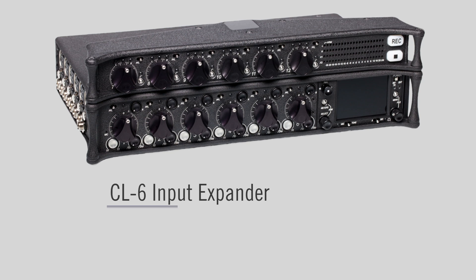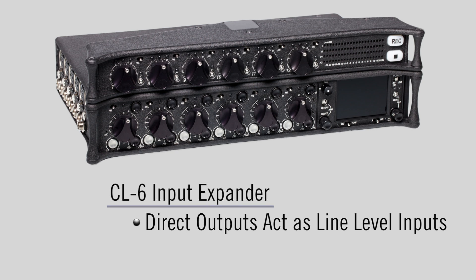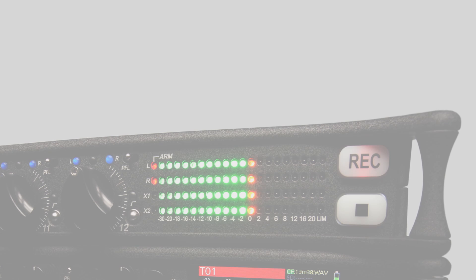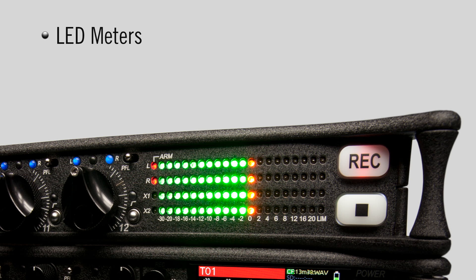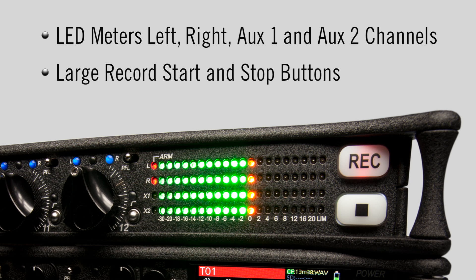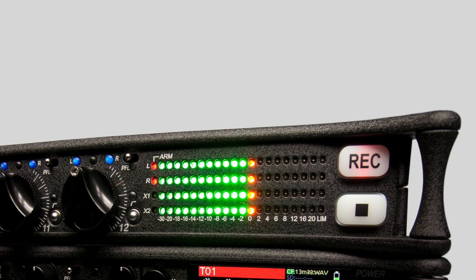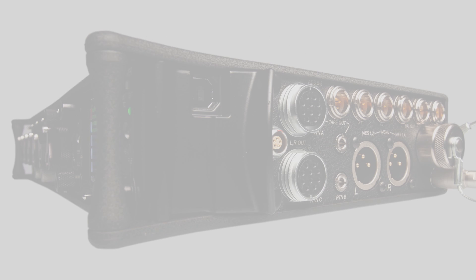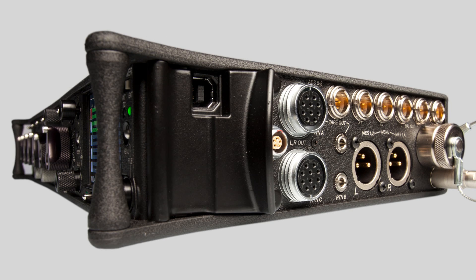When the 664 is used with the CL6 input expander, the direct outputs act as 6 additional line level inputs for a total of 12 analog inputs. The CL6 also provides LED meters for the left, right, aux1 and aux2 channels, and large tactile record start and stop buttons. PFL switches are available for each of the additional inputs.